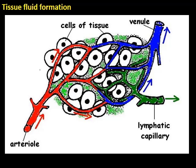The blood that enters the capillary network comes from the arteriole, which is a blood vessel that branches off an artery. The blood inside the arteriole end of the capillary network is under relatively high blood pressure because it comes from the artery. It has a high level of oxygen — high ppO2 — but a relatively low level of carbon dioxide — low ppCO2 — and it is under relatively high pressure.